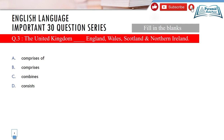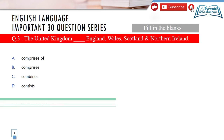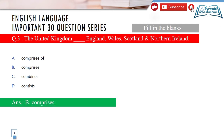Question 3 is a fill-in-the-blanks question. 'The United Kingdom _____ England, Wales, Scotland and Northern Ireland.' The options are: A) comprises of, B) comprises, C) combines, D) consists. The correct answer is option B — 'comprises' — because 'comprises of' is grammatically incorrect. I encourage you to write your score in the comments after finishing all 20 questions.